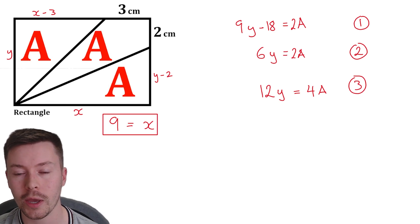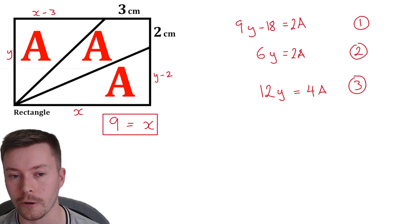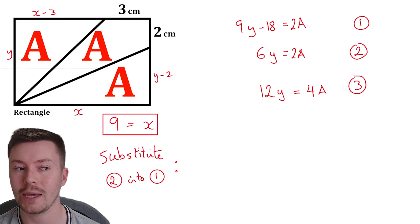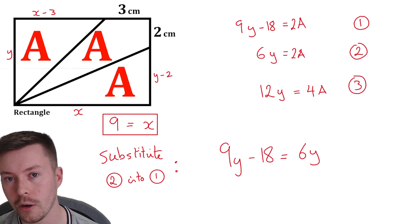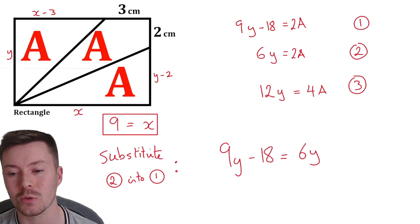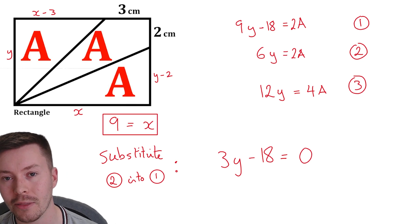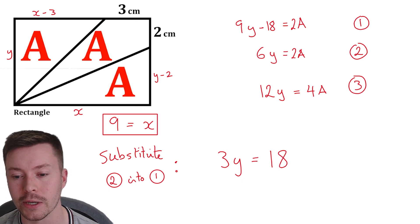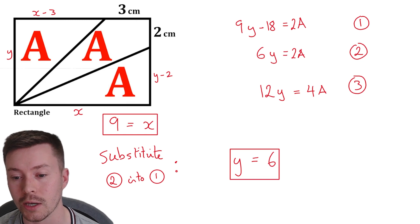So I just need to find two here that I can use to eliminate either Y or A. I'm going to substitute equation two into equation one. So I'm going to replace the 2A with 6Y, and I'm going to get 9Y minus 18 is equal to 6Y. Subtract 6Y from both sides and we get 3Y minus 18 is zero. Add the 18, 3Y is 18. Divide by three and we get Y is equal to six.